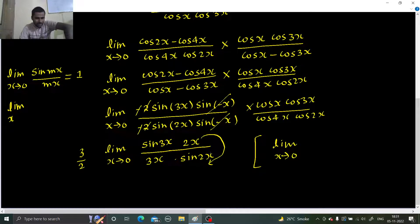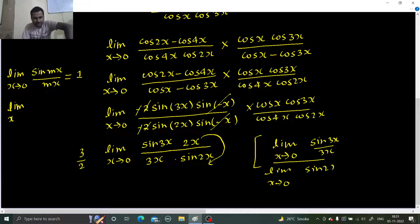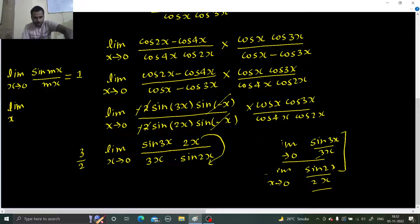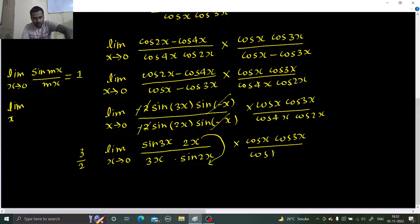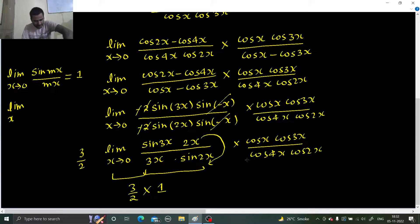So this becomes: limit x tending to 0 of sin 3x divided by 3x, which equals 1, divided by limit x tending to 0 of sin 2x divided by 2x, which also equals 1. So the sin limit part gives us 1, and we have 3 by 2 times 1.